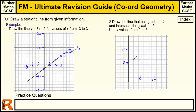The gradient is one half, so every two across I go up one. So: two squares across, one up; two across, one up; two across, one up — until I reach x = eight. I draw the line through those points. The equation of this line is y = (1/2)x + 5, where one half is the gradient and five is the y-intercept. That's how to plot lines quickly without drawing tables of values.